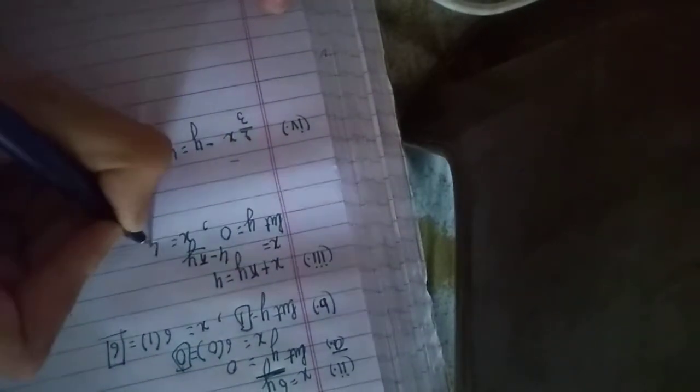Now moving on to the third part. x plus πy equals 4. Now here we will find x's value: x equals 4 minus πy. When y equals 0, x is 4 minus π into 0, which is 4 minus 0, which equals 4. This is our first part.